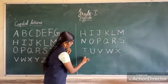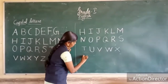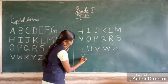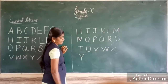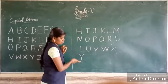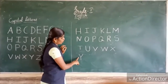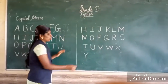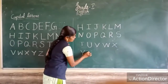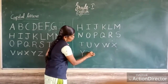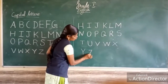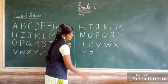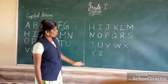Next, Y. First write V, then add one standing line going down. This is Y. The last letter is Z. One sleeping line at the top, one cross line going diagonally, and one sleeping line at the bottom. This is Z.